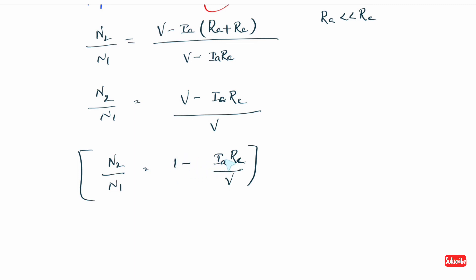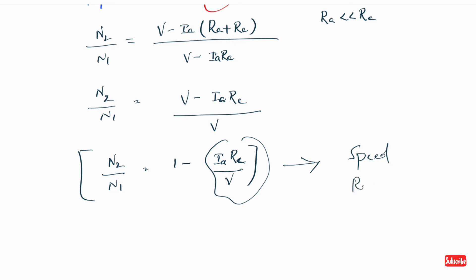Using the formula: 1 minus some value, for example 1 minus 0.2 = 0.8. So N2 = 0.8 times N1, meaning the new speed is 80% of rated speed. This confirms speed is below rated speed. The speed regulation formula is: Ia·Re divided by V.